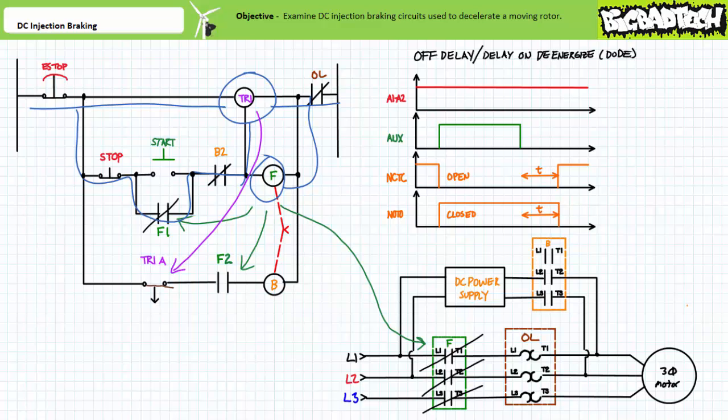An operator wishing to rapidly stop this motor opens the stop button. This de-energizes the F contactor coil and the controlling input of timer relay TR1. The associated F contacts immediately change states. The F1 contact opens, removing the holding circuit. The F2 electrical interlock closes, and the F primary contacts open, removing three-phase contact.